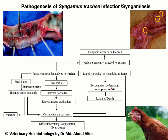Ecchymosis, edema, and pneumonia result from heavy migration of larval stages throughout the lungs. All these lead to respiratory distress, and in severe cases birds may die. The male parasite also contributes to the development of minute nodule formation in the wall of the trachea due to its permanent attachment.